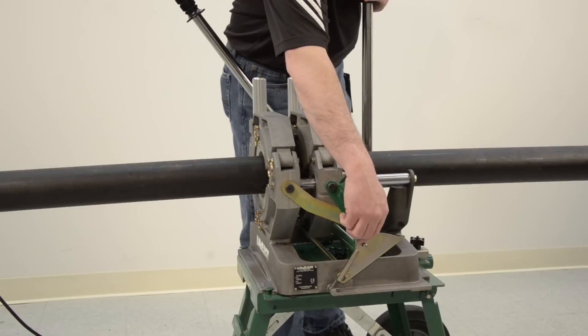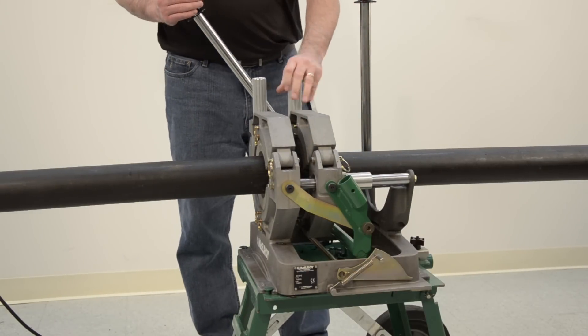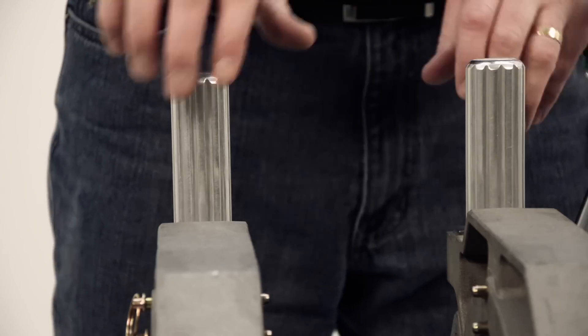Once the cooling cycle has completed, disengage the locking cam. Loosen the clamp knobs and open the jaws. Open the carriage and remove the pipe.